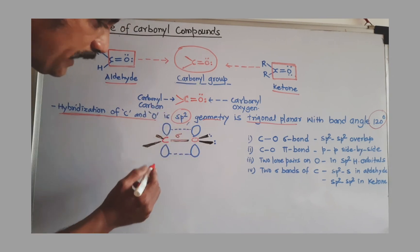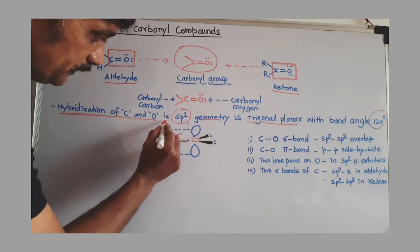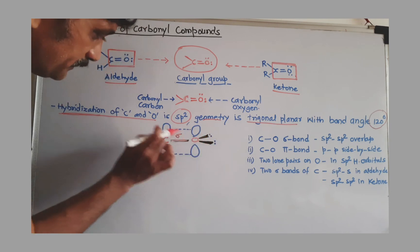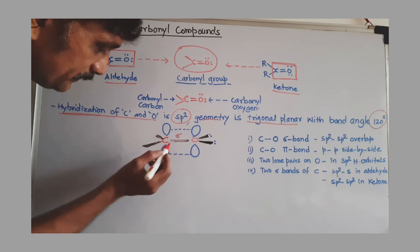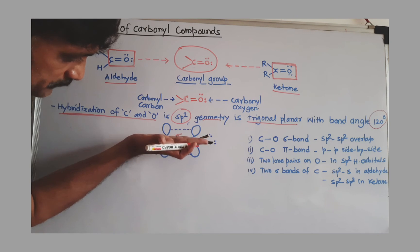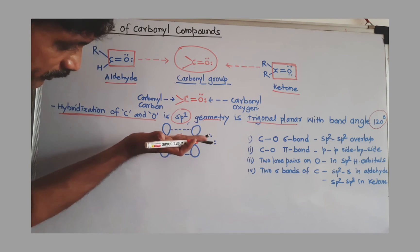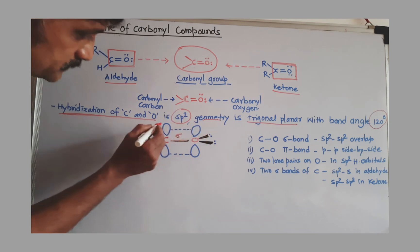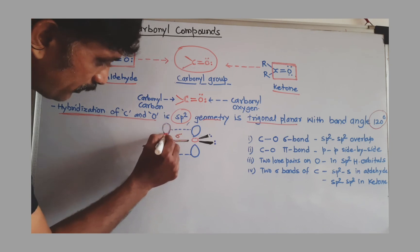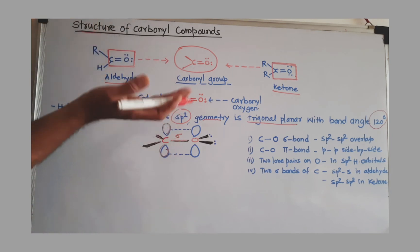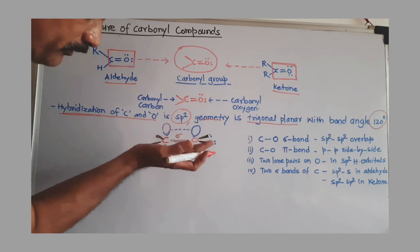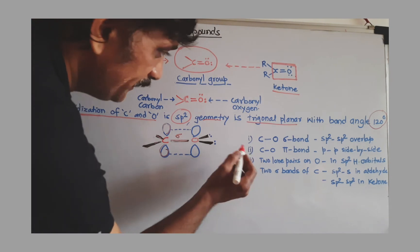With sp2 hybridization, we know there is a p orbital lying perpendicular to the plane of sp2 hybrid orbitals. You can see here: this is the plane of hybrid orbitals, and this blue lobe is a p orbital which is perpendicular to those sp2 hybrid orbitals.